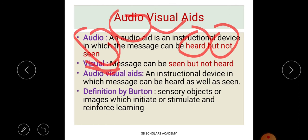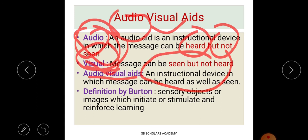It is not a hard topic, but it is important to understand the types — what is audio, what is visual, and what are audio visual aids. When we combine audio and visual, audio visual aids are those that can be both heard and seen. It is considered an instructional device where the message can be heard as well as seen.